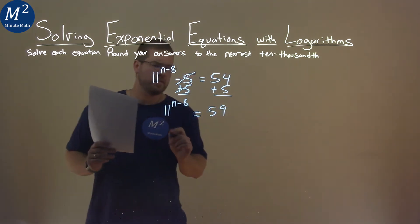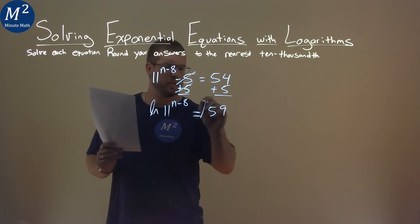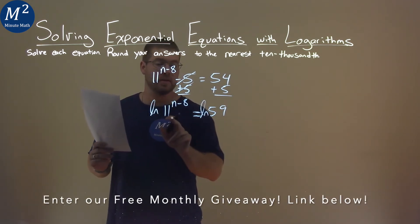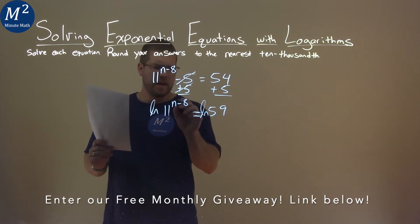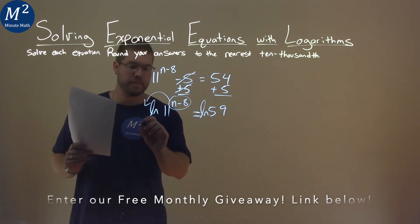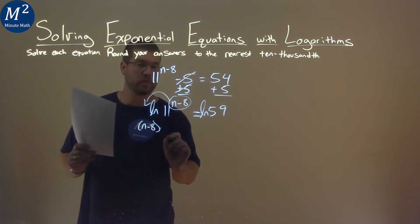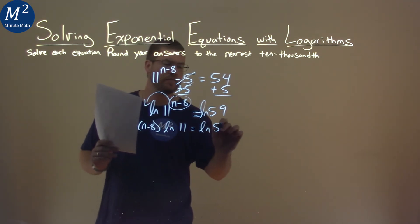Our rules of logarithm state that we can take the natural log of both sides here. Let's do that. We take the natural log of both sides of the 11 to the n minus 8 power and the 59. That allows me to take this n minus 8 power and put it out front.